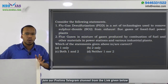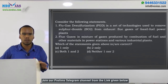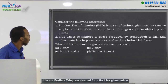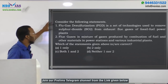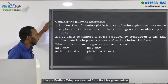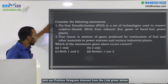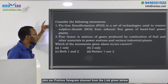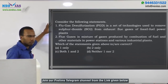This question is regarding pollution — specifically a technology used to curb pollution. Consider the following statements: Statement A: Flue gas desulfurization is a set of technologies used to remove sulfur dioxide from exhaust flue gases of fossil fuel power plants. Statement B: Flue gas is a mixture of gases produced by combustion of fuel and other materials in power stations and various industrial plants.